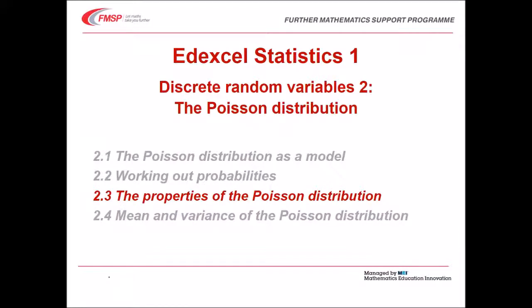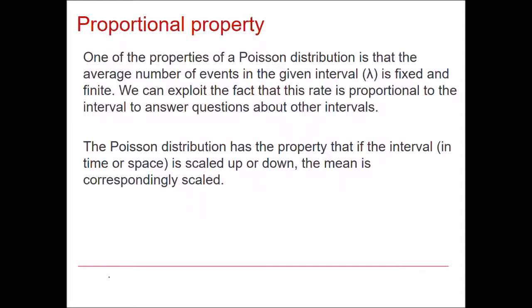Hello, this is a video for Edexcel Statistics 1. It's the third in the series and we'll focus on the properties of the Poisson distribution. One of the properties of the Poisson distribution is that the mean number of events is in proportion to the size of the interval. We can exploit this fact to extend our model to wider or narrower intervals than we started with.